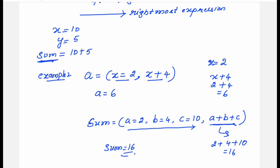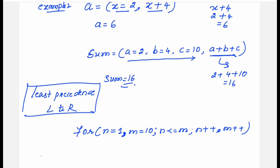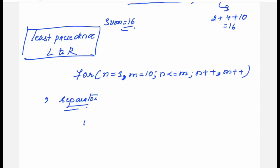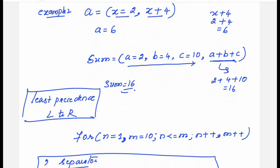Two points to remember about the comma operator: the comma operator has the least precedence, and its associativity is from left to right. Note that comma in C programming is also used as a separator, where the functionality is different. For example, when initializing variables like int m=10, a=20, c=30, or in a printf statement with multiple arguments, the comma acts as a separator.